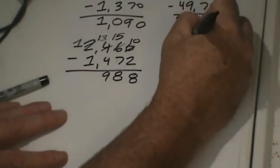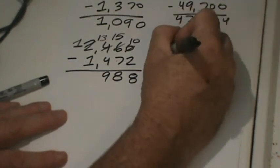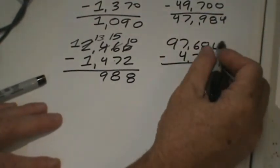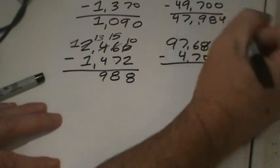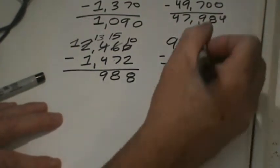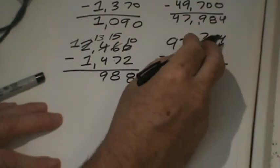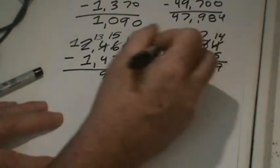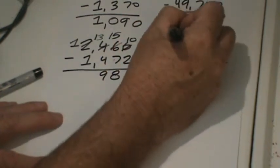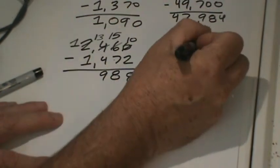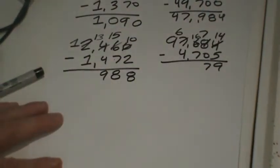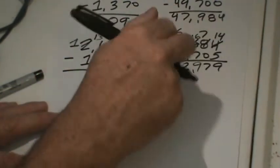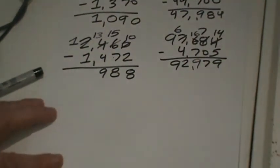On F: 97,684 minus 4,705. Let's start with our ones. I can't take five away from four, so we have to decompose the tens. Make that seven tens and bring one ten over here, so instead of four ones it's now fourteen ones. Fourteen ones minus five ones is nine ones. Seven tens minus zero tens is seven. You can't take away seven hundreds from six hundreds, so we need to decompose a thousand and bring ten hundreds over here — that's now sixteen hundreds. Sixteen hundreds minus seven hundreds is nine hundreds. Six thousands minus four thousands is two thousands. Bring down the nine and we're at 92,979.